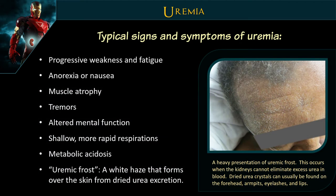Typical signs we'll see with uremia when patients have been missing dialysis: progressive weakness and fatigue, nausea, muscle atrophy, tremors, altered mental function, shallow respirations, metabolic acidosis, and uremic frost. How many times have you been to a dialysis center and seen patients with that white flaky frost on them? You might think it's just really bad dry skin — but that's uremic frost. It happens when they've missed sessions and their body tries to excrete waste through the sweat glands.